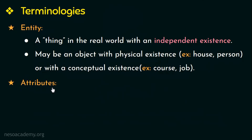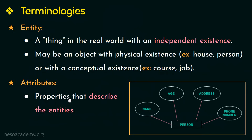Next, let us see what attributes are. Attributes are properties that describe the entities. For example, if I have an entity person, the properties that would describe this particular entity would be name, age, address, phone number, etc. These are called the attributes of this entity. In our further videos we will learn about each of the symbols used in the ER diagram. Now let's look into the several types of attributes in the ER model with examples.